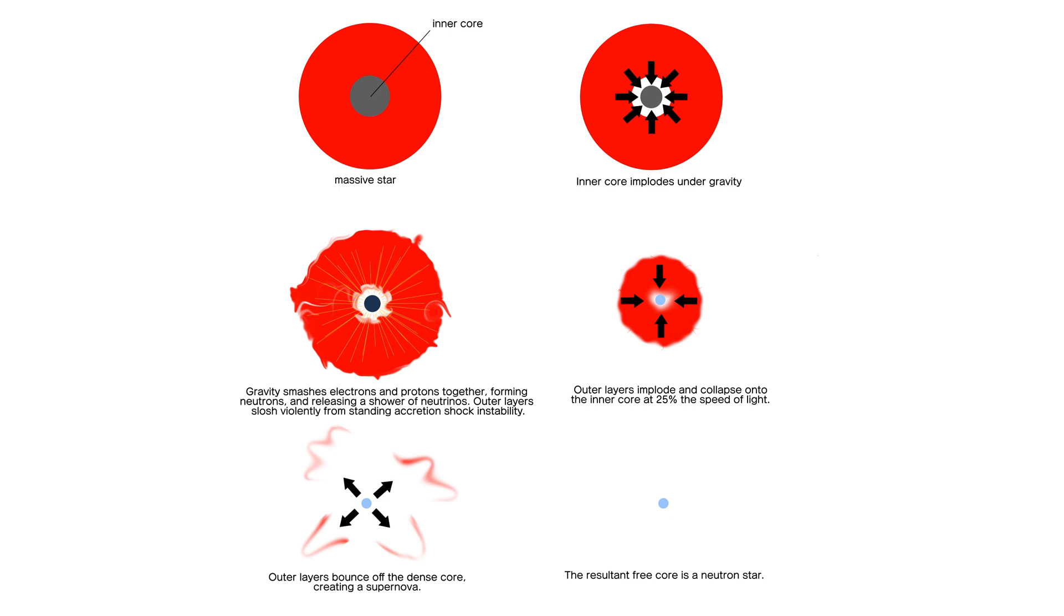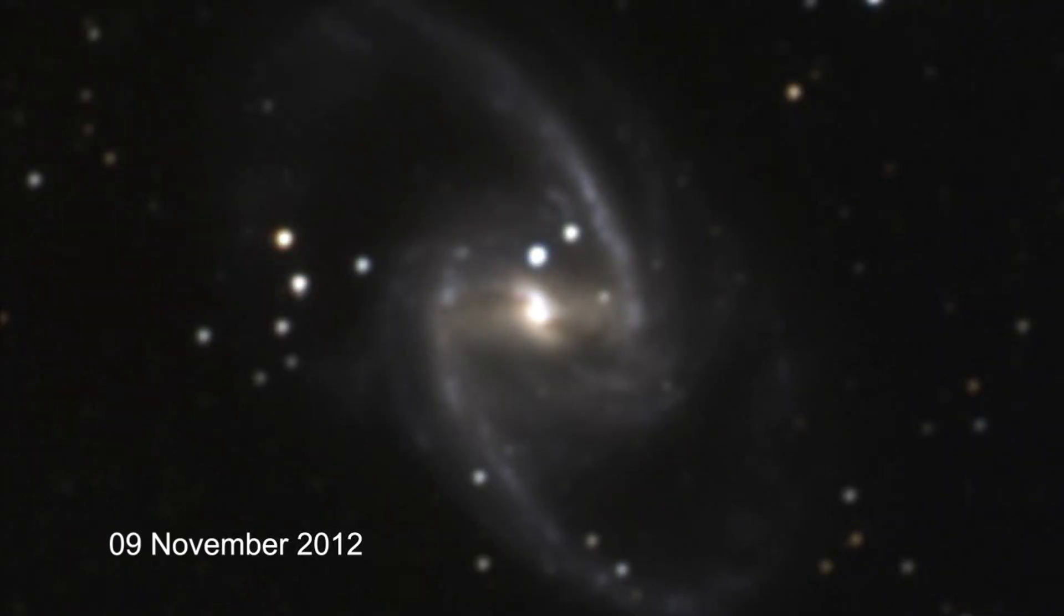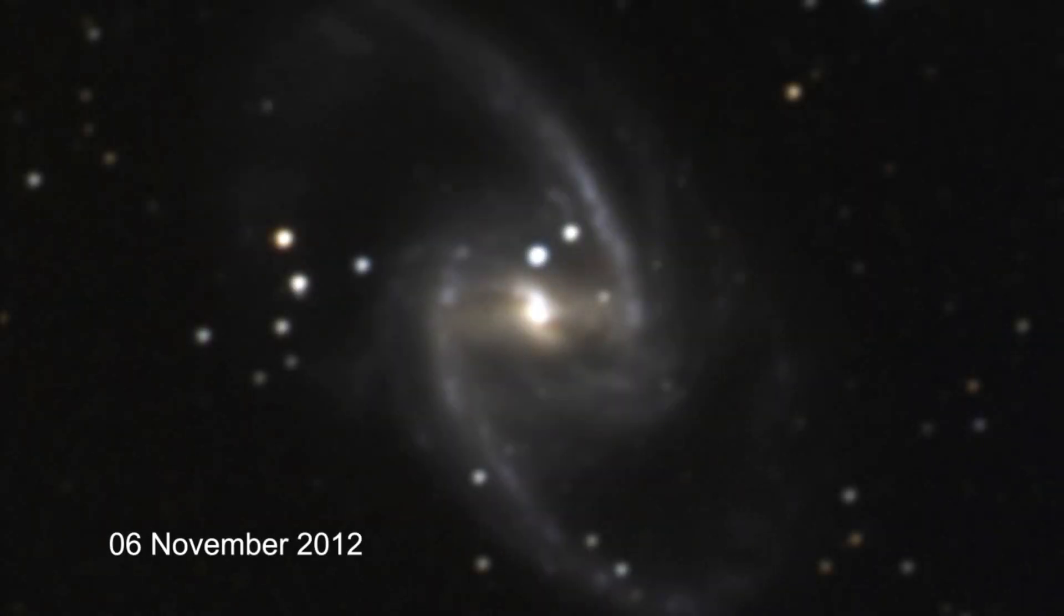shredding the star's outer layers and releasing an extraordinary burst of light and matter. This phase unfolds over hours to days, creating the illusion that the transformation of the core is gradual.